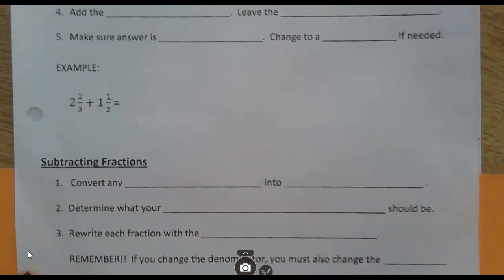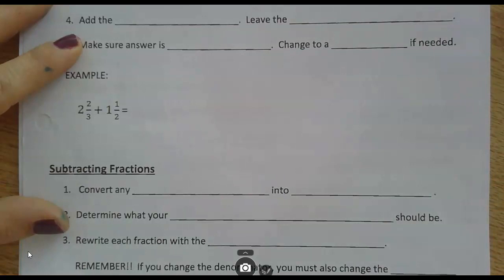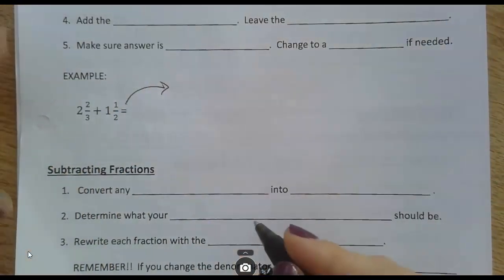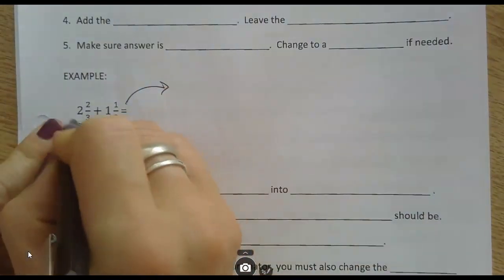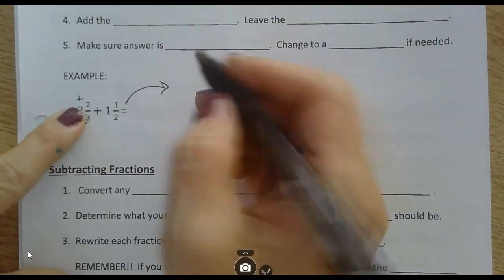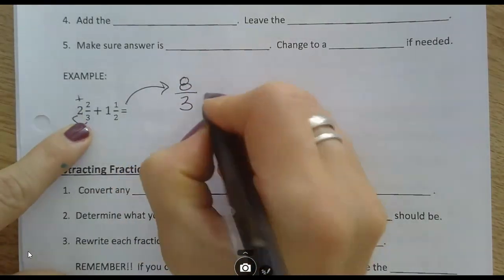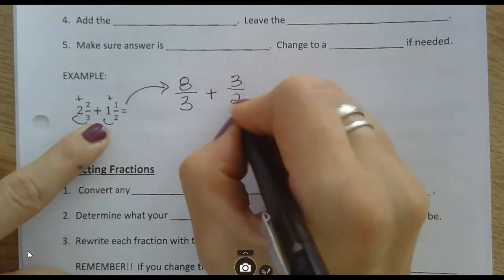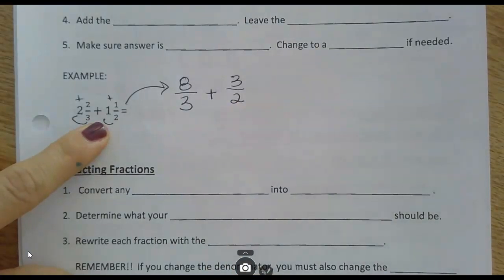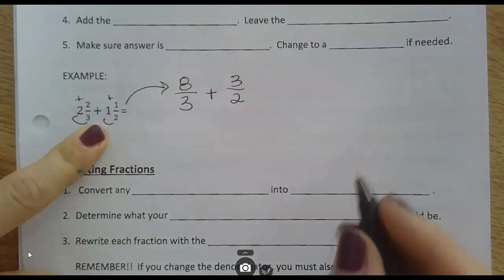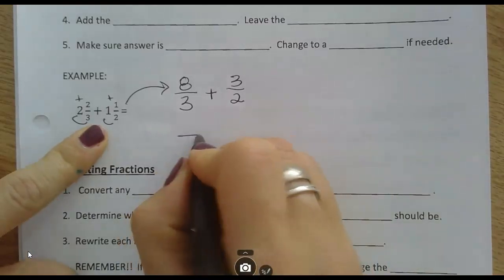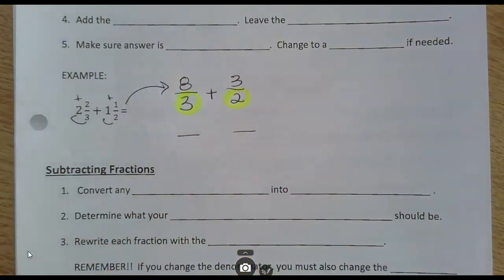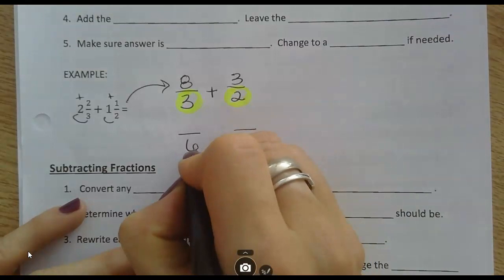Now working out the adding example: 2 and 2/3 plus 1 and 1/2. First, rewrite both as improper fractions. Multiply and then add: 8/3 plus 3/2. Next, rewrite with common denominators. What do 3 and 2 both go into? They both go into 6. So the common denominator is 6.